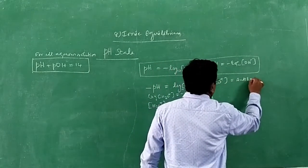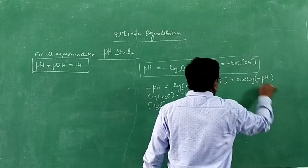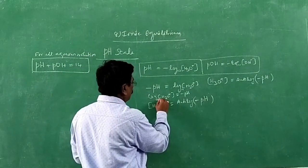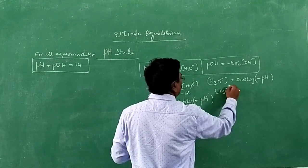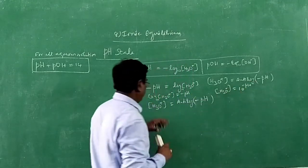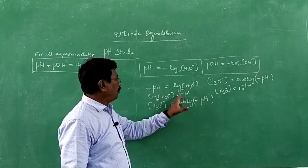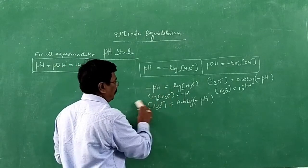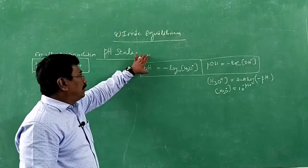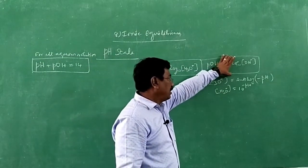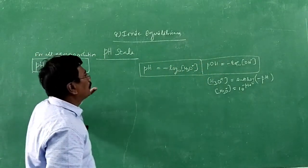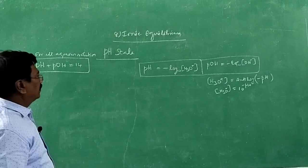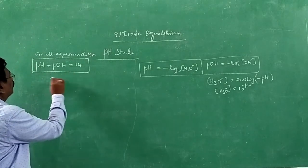So hydronium ion concentration = antilog(−pH). Since it is logarithm to base 10, this is also equal to 10^(−pH). To summarize: pH = minus log[H₃O⁺], pOH = minus log[OH⁻], pH + pOH = 14 for any solution, and hydronium ion concentration = antilog(−pH) = 10^(−pH).